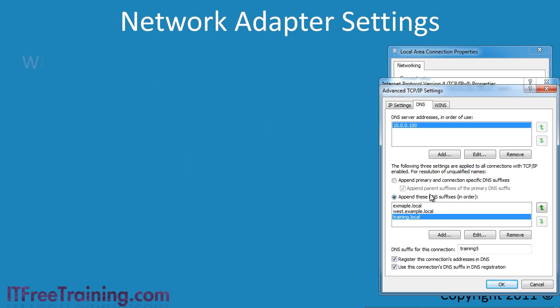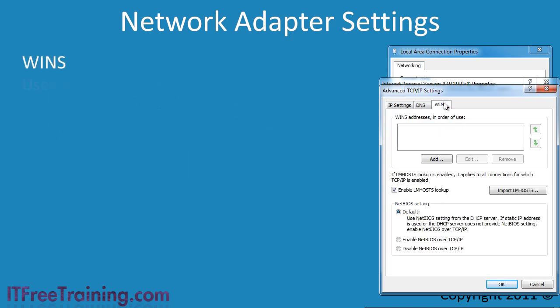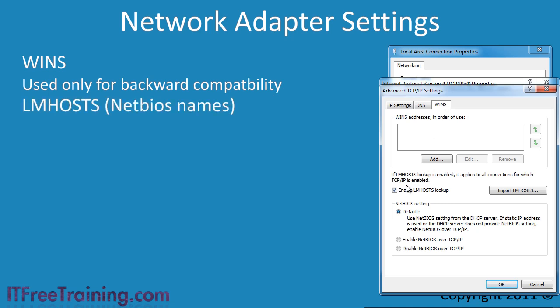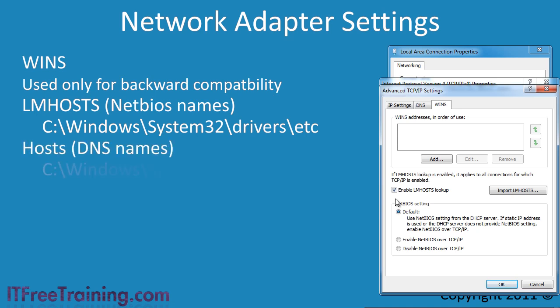The last tab is the WINS tab. WINS is an old name resolution system that was used before Windows 2000. Some legacy applications may still require a WINS server on your network, however nowadays these legacy applications should be rare. The option lmhosts lookup means that a file called lmhosts will be read and any names in this file will be used for name resolution. Nowadays if you need to configure manual name resolution, you should more likely use the other file called hosts, but for backward compatibility the lmhosts file is still here.